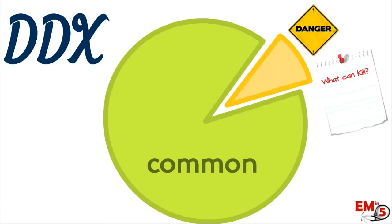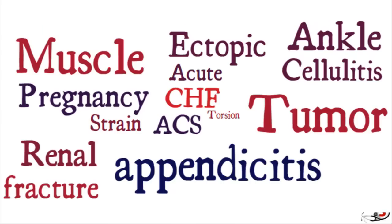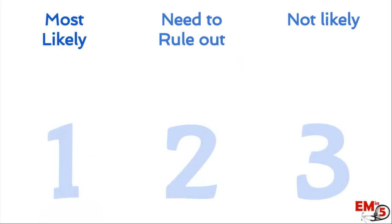Once we've created our differential, it's all a big jumble and we need to organize it a bit better. We're going to sort each of those differential diagnoses into three columns: most likely, need to rule out, and not as likely.